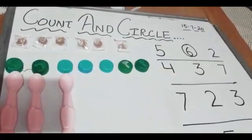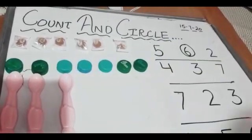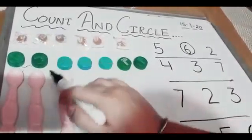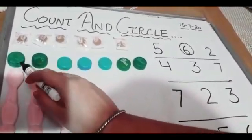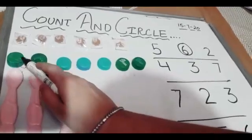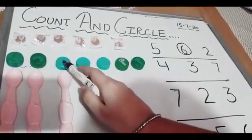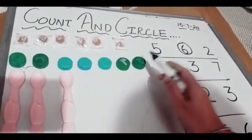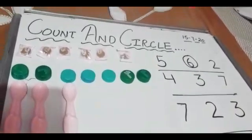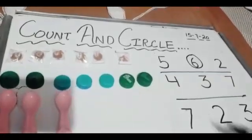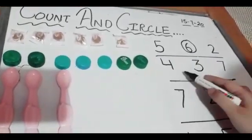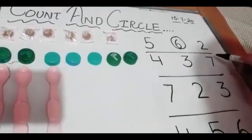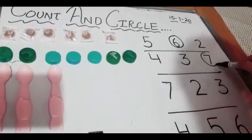Now see the next one. Urvil, now it's your turn. Count how many bottle caps are there: one, two, three, four, five, six, seven. How many bottle caps are there, Urvil? Seven bottle caps — very good! Now find out from here where is number seven. Here is number seven — very good, now circle it like this.